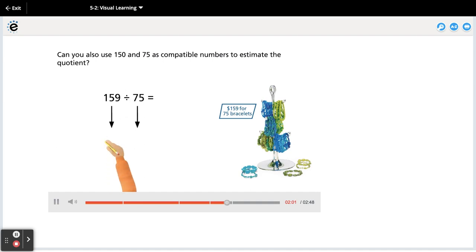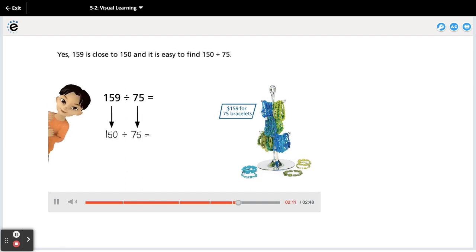Can you also use 150 and 75 as compatible numbers to estimate the quotient? Yes, 159 is close to 150 and it is easy to find 150 divided by 75. There's often more than one choice of compatible numbers that could be used to find an estimate.